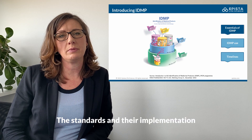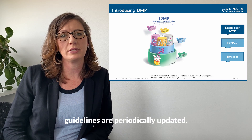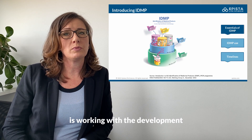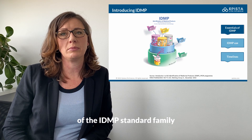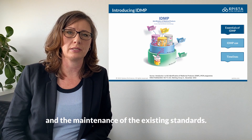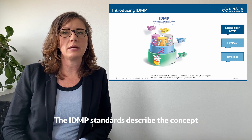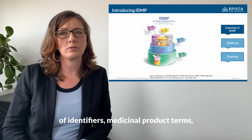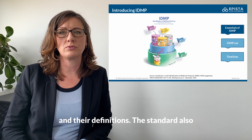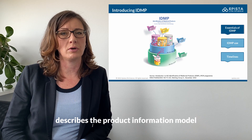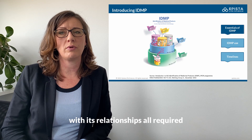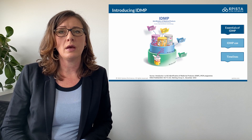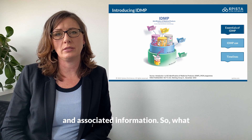The standards and their implementation guidelines are periodically updated. A dedicated working group under ISO is working with the development of the IDMP standard family and maintenance of the existing standards. The IDMP standards describe the concept of identifiers, medicinal product terms and their definitions. The standard also describes the product information model with its relationships, all required to allow for establishing the unique identification of medicinal products and associated information.